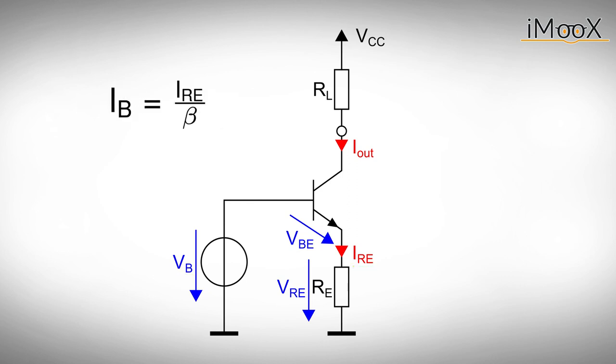The base current is obtained via the current gain beta. With the currents flowing through base and emitter we can solve for the collector or output current Iout which equals IRE times 1 minus 1 over beta. The last term 1 over beta can be neglected and we can state for the output current Iout equals IRE.